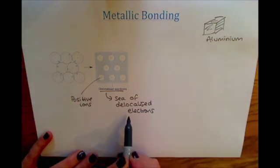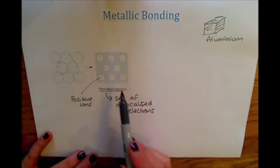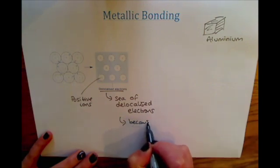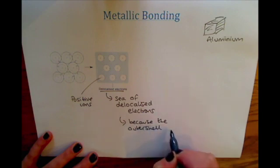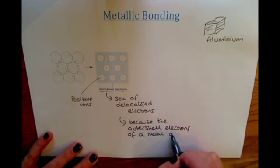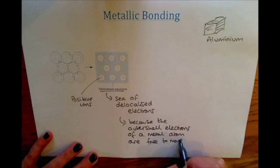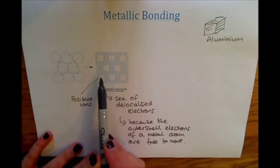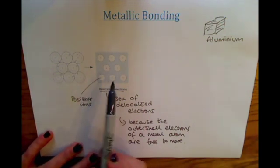These delocalized electrons come from the fact that the outer electrons in a metal atom are free to move when bonded as a metal. So the outer shell electrons are free to move. Because they're free to move, they can move all around between these positive ions, and because they've left the metal atoms, we now call these positive ions.